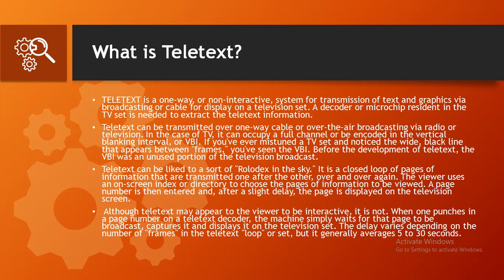In the case of TV, teletext can occupy a full channel or be encoded in the Vertical Blanking Interval, or VBI. If you ever mis-tune a TV set and notice the white-black line that appears between frames, you have seen the VBI. Before the development of teletext, the VBI was an unused portion of the television broadcast. Teletext can be likened to a sort of Rolodex in the sky — a closed loop of pages of information transmitted one after the other, over and over again.